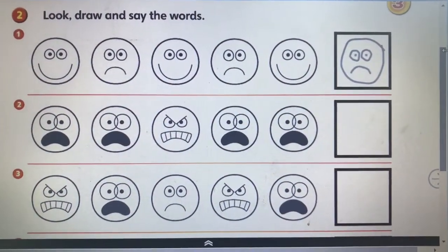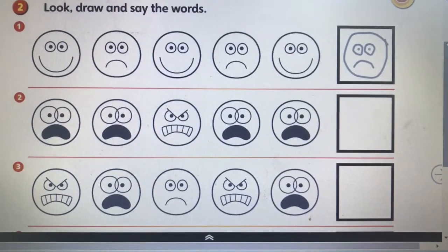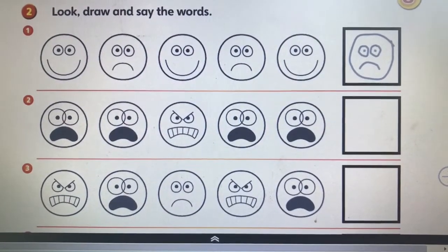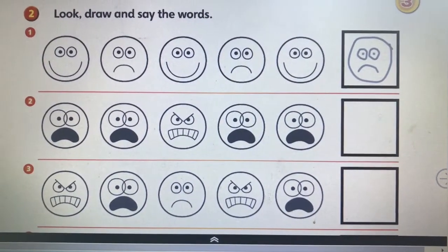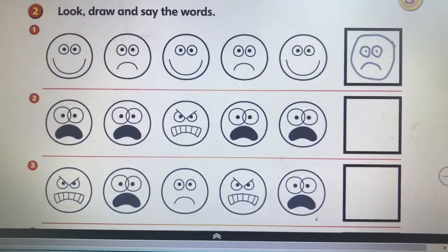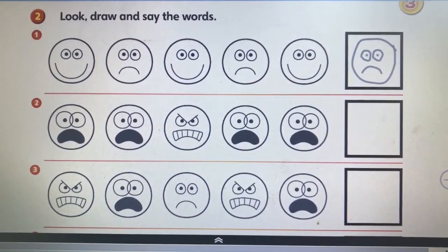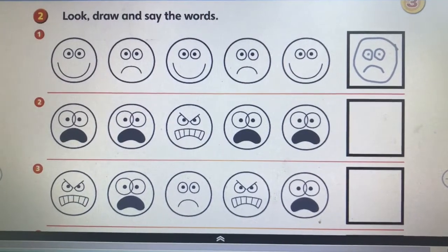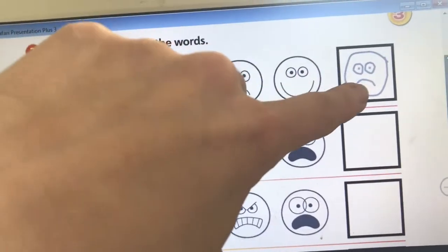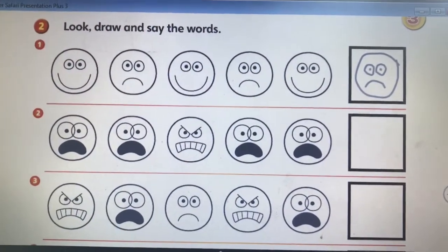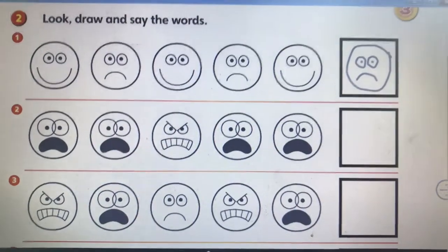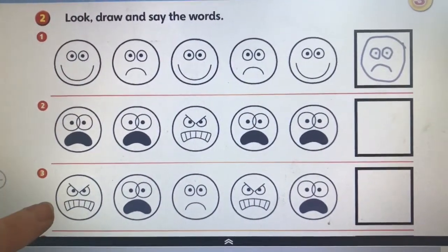If you remember the words about the feelings, let's see — you can try to do this exercise. You have different faces. You have to look at them, draw, and then say the words. Look at the first line — you have a happy face, then a sad face, and so on. The last one — is the face happy or sad? Sad. You can do the same for line two and line three.